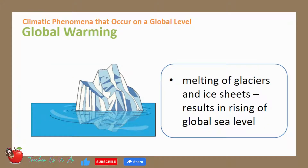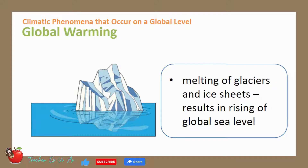One evidence of global warming is the melting of glaciers and ice sheets. The Greenland and Antarctic ice sheets have decreased in mass. Data from NASA's Gravity Recovery and Climate Experiment show Greenland lost 150 to 250 cubic kilometers — 36 to 60 cubic miles — of ice per year between 2002 and 2006, while Antarctica lost about 152 cubic kilometers. If melting continuously happens, the global sea level will eventually rise, causing low-lying lands to be submerged in water.